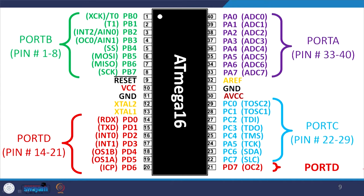Looking at the pin configuration: pin numbering goes from 1 to 20 on the left-hand side and 21 to 40 on the right-hand side. Port B occupies pins 1 to 8, corresponding to PB0, PB1, PB2, PB3, and so on.